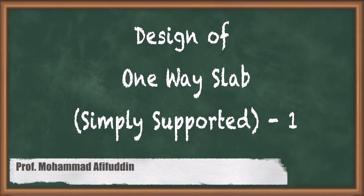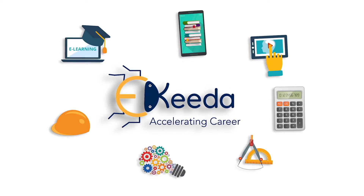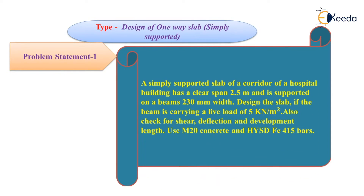Hello everyone, my name is Mohamad Afifuddin. In this video, we are going to design a one-way slab, and we will design a simply supported slab. Here is the problem statement: a simply supported slab of a corridor of a hospital building has a clear span of 2.5 meters, supported on beams of 230 mm width. Design the slab if it carries a live load of 5 kN per meter square. Also check for shear, deflection, and development length. Use M20 concrete and HYSD FE415 bar.